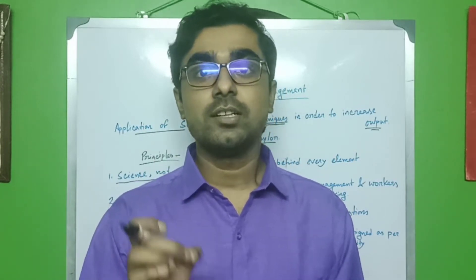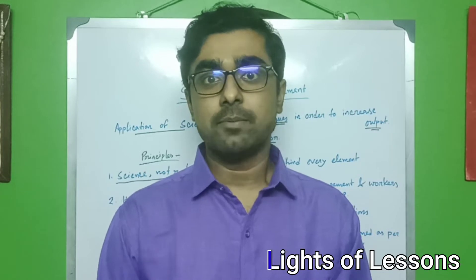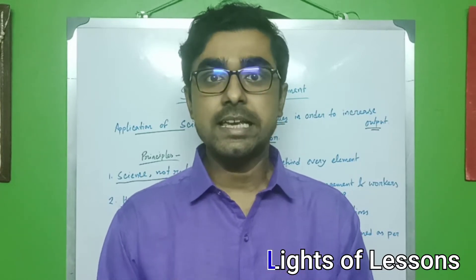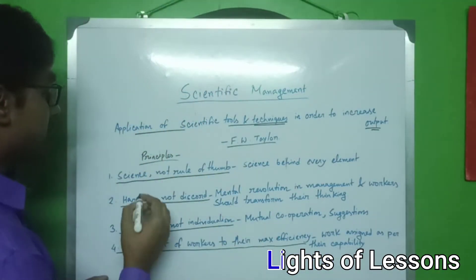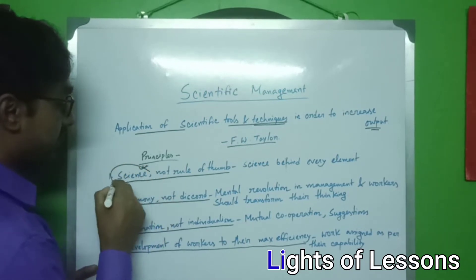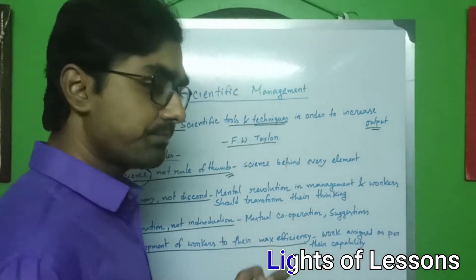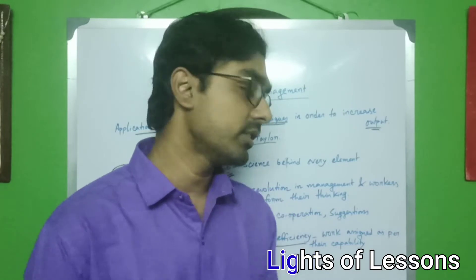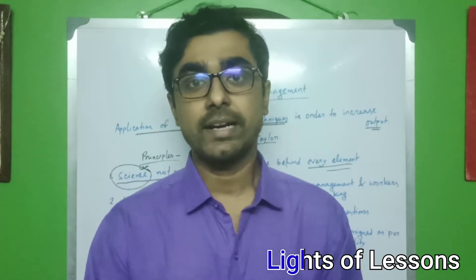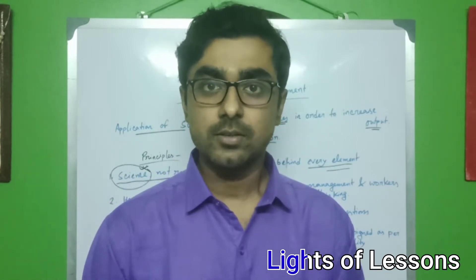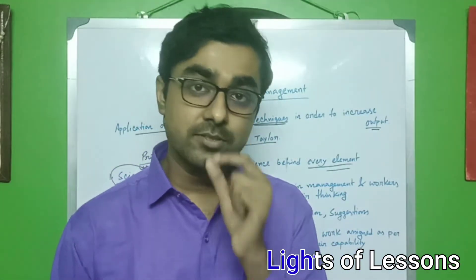So that is called scientific tools and techniques. In today's class we will basically see the different principles. There are basically four principles in scientific management theory. The first principle is science — that means it depends on logic. Science, not rule of thumb. Every element of the organization — every decision, work efficiency, machinery efficiency, projected output — everything is based on science and logic.